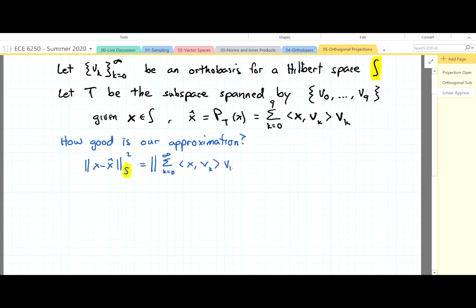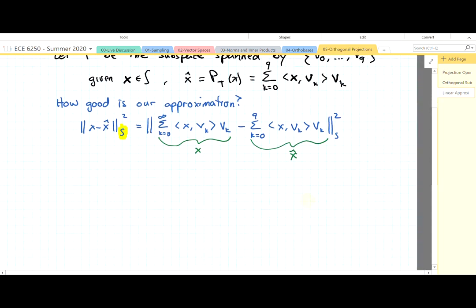So if we write it like this, X can be written in terms of the orthobasis, and X hat can be written in terms of the orthobasis for k equals 0 to 9. And sometimes you do really tricky math. Today is not one of those days. It now looks like this.